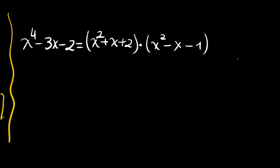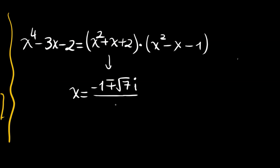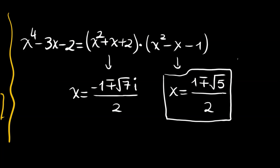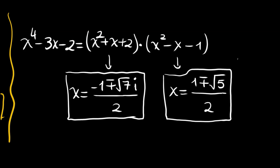From the quadratic formula applied to the first factor, x equals negative 1 plus or minus the square root of 1 minus 8, giving negative 1 plus or minus i times root 7, all divided by 2 — these are complex roots. For the second factor, x equals 1 plus or minus the square root of 1 plus 4, giving 1 plus or minus root 5, all divided by 2. One of these is the golden ratio. Thank you for watching and see you in the next videos.